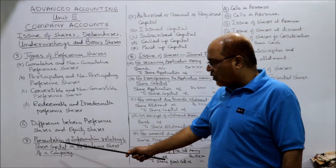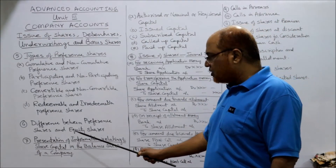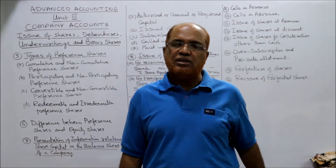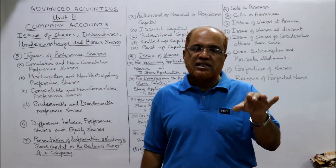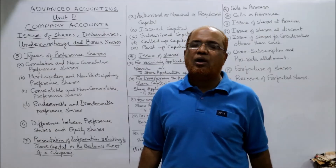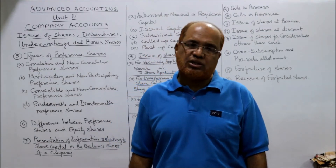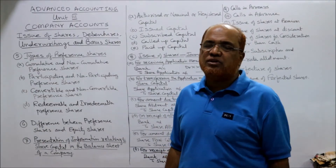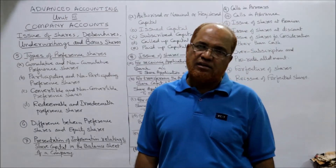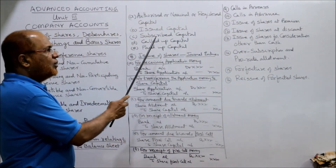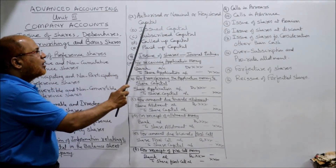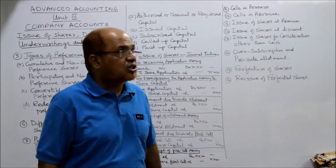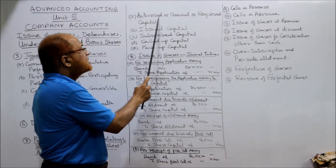Next topic: presentation of share capital information in the balance sheet of a company. According to the Companies Act 2013, a specific format has been prescribed describing how share capital should be disclosed. The first item to be disclosed is authorized, nominal, or registered capital — the maximum capital a company can raise, as specified in the capital clause of the memorandum of association.